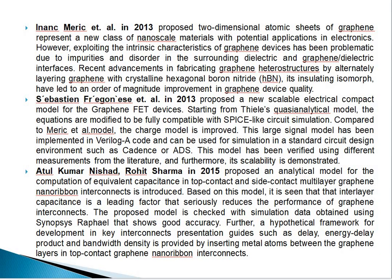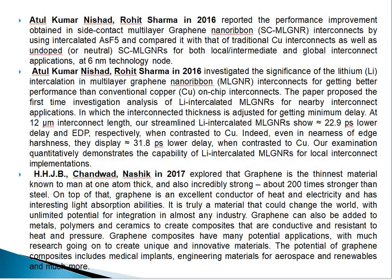Based on this model, it was seen that the interlayer capacitance is a leading factor that seriously reduces the performance of graphene interconnects. The proposed model was checked with simulation data obtained using Synopsys, showing good accuracy. In 2016, Arthur Kumar and Rohit Sharma investigated the significance of lithium intercalation in multilayer graphene nanoribbon interconnects for getting better performance than conventional copper on-chip interconnects. This paper proposed the first-time investigation and analysis of lithium intercalation in multilayer graphene nanoribbons.